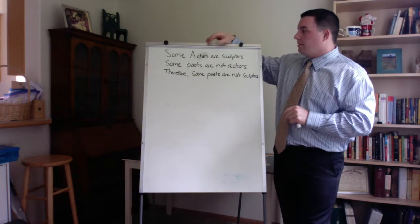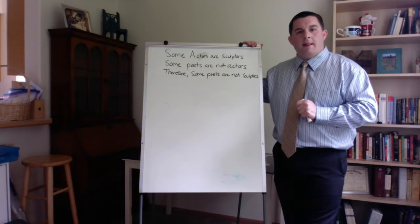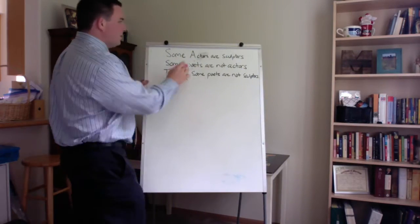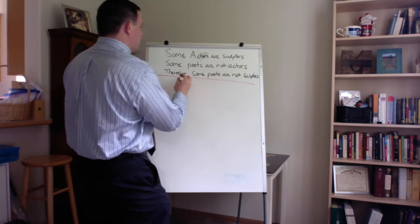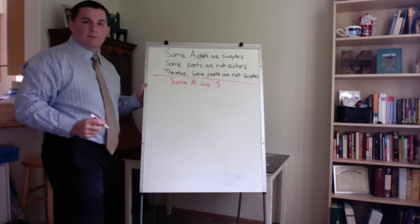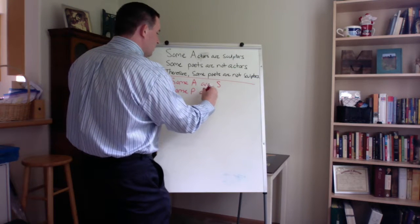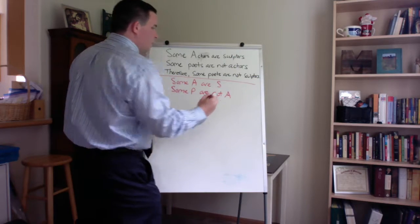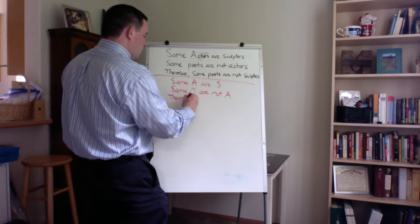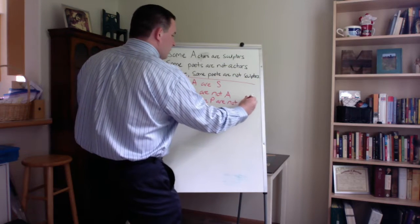So let's go ahead, let's break it down into its simple form, and then we'll go ahead and we will use a Venn diagram to test for validity. Okay, so some actors are sculptors. We can go sum A are S, sum P are not A, premise two, conclusion, therefore sum P are not S.